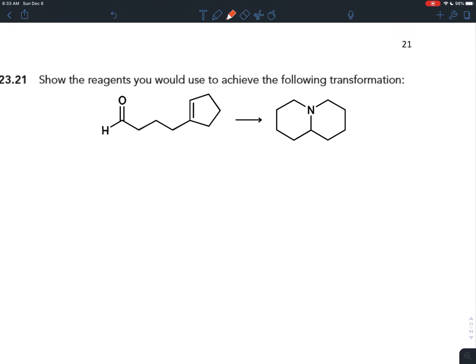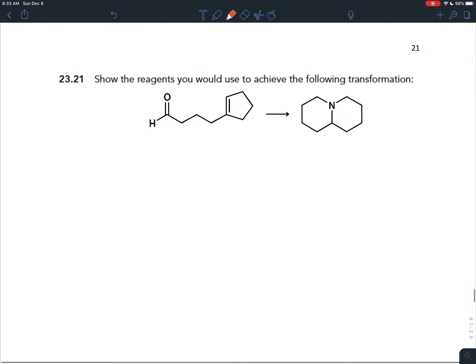Now we've learned three new ways of making amines in this chapter. So far we've learned the Gabriel synthesis, but that can only make a primary amine. We've learned the azide synthesis, but that also can only make a primary amine.